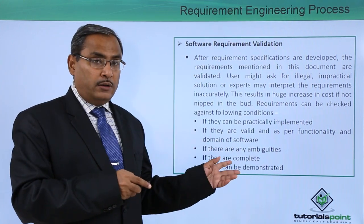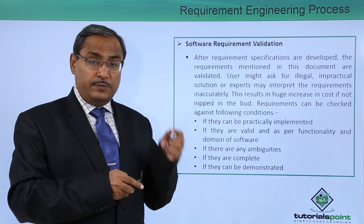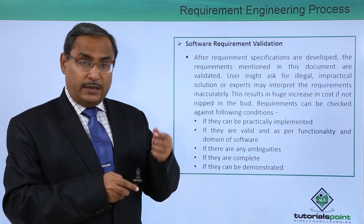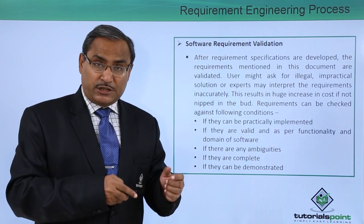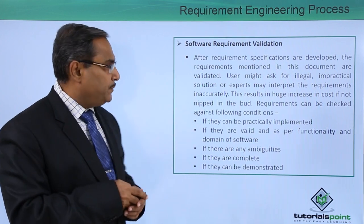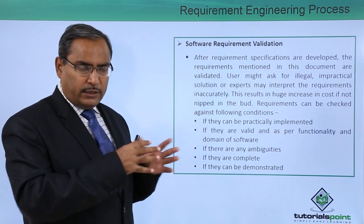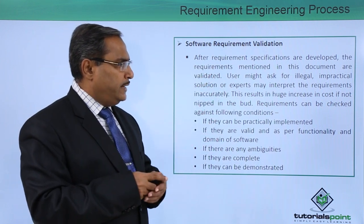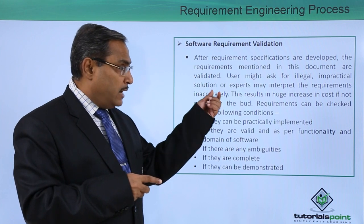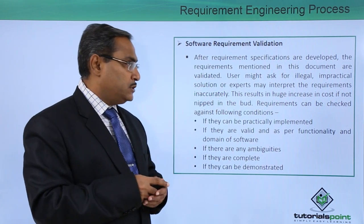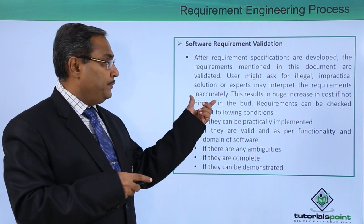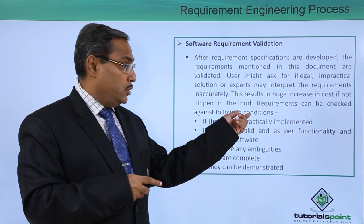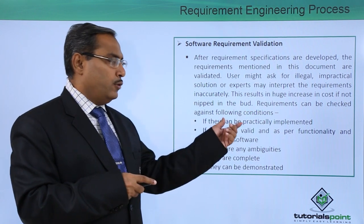The fourth and final step is software requirement validation. The earlier three steps were feasibility study, requirement gathering, and software requirement specification (SRS). After the requirement specifications are developed, the requirements mentioned in the document are validated. Users might ask for illegal or impractical solutions, or experts may interpret requirements inaccurately, which results in a huge increase in cost if not caught early. That is why requirements are checked against certain conditions.